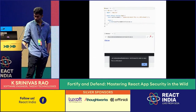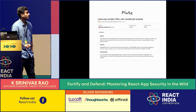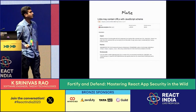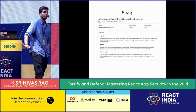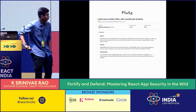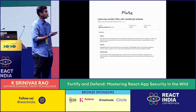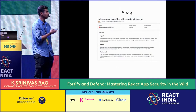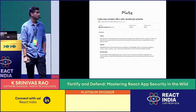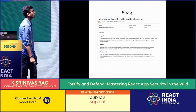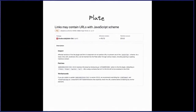Here is another real-life example: a security advisory for a package called Plate, a rich text editor for React apps. They had the same open redirect vulnerability — directly injecting user-provided links into their dialogs. Later they released a patch that checks user-provided links against a predefined list of schemes like HTTP, HTTPS, and mailto, which fixed the vulnerability. Always be cautious when dealing with user-provided links. Assume they can provide any scheme and the browser will execute it, so always verify whether a link is safe.